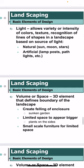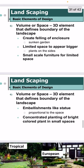The fifth element is light, which allows variety or intensity of colors and texture recognition of lines and shapes in a landscape, based on the source of light — either natural from the sun, moon, or stars, or artificial from lamp posts, path lights, etc. The sixth element is volume or space, a 3D element that defines the boundary of the landscape by creating a feeling of enclosure or sunken garden, or making limited space appear bigger like plants on the sides and small-scale furniture.